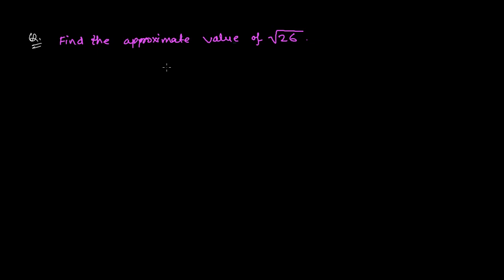This is the third question in the topic 'Approximation' under Application of Derivatives. The question asks us to find the approximate value of √26. If 26 were a perfect square number, it would be very easy to find its square root — like 25, 16, or 4.